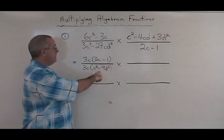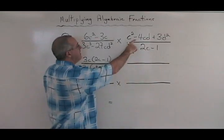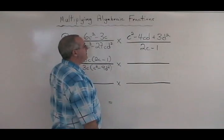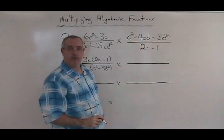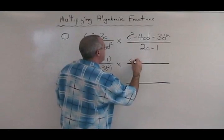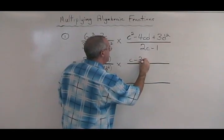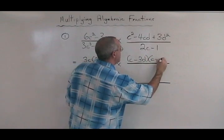This is a difference of squares, so it is still factorable, but we will do that in the next step. Here we have a simple trinomial. What two numbers multiply to give 3 but add to give negative 4? They are negative 3 and negative 1. So we have c minus 3d and c minus d.